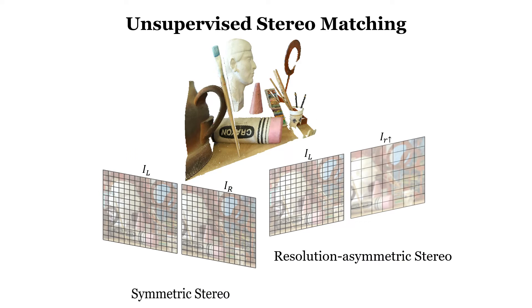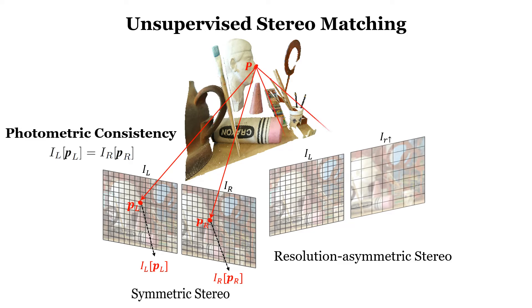This unsupervised scheme is based on the assumption of photometric consistency. It means that the corresponding pixels in two views, which record the light rays emitted from the same scene point, should have the same intensity or color. However, this assumption is violated in resolution asymmetric stereo since two views have different resolutions. We name it the photometric inconsistency.